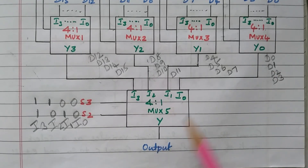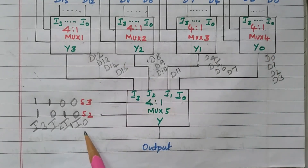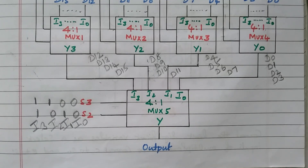These are all decided by the selection lines. S0 and S1 decide the first-level data, and S2 and S3 decide the final output. In this video, we discussed how to design a 16-to-1 multiplexer using 4-to-1 multiplexers, how to connect the selection lines, and that 5 multiplexers are needed in total — 4 for the 16 data inputs and 1 final multiplexer to produce a single output. The 2 LSB selection lines are connected in parallel to all 4 multiplexers, and the other 2 MSB selection lines are connected to the 5th multiplexer.